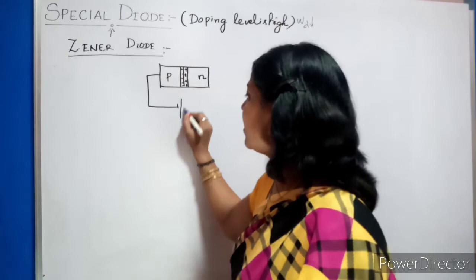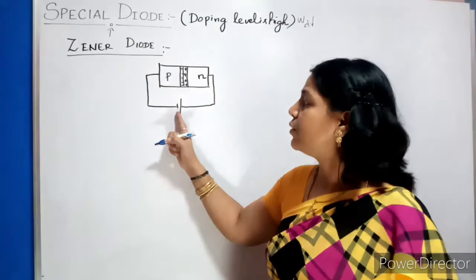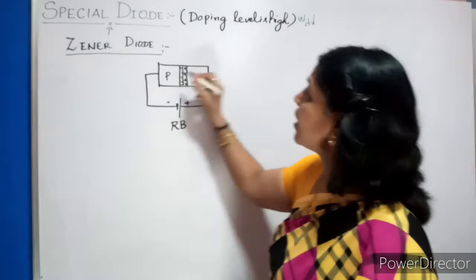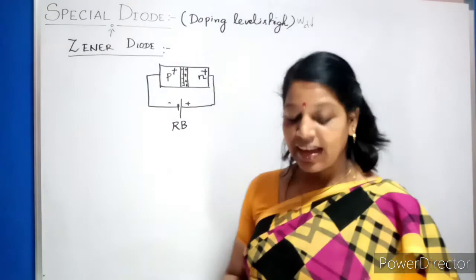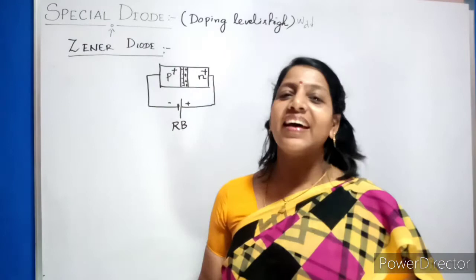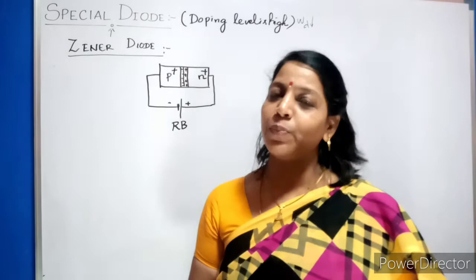Now, the Zener diode is specially designed to operate in reverse bias. Reverse bias means P should be given to the negative terminal and N should be given to the positive terminal. This is called reverse biasing. I mentioned the doping level is high. How is it indicated? The positive symbol indicates that they are heavily doped. In some places they mention P minus and N minus, which means they are lightly doped. This is the symbolic presentation of doping levels.